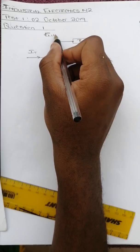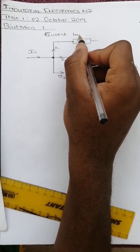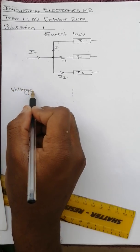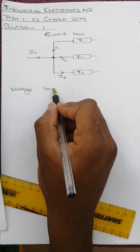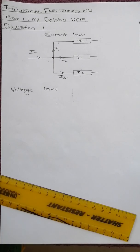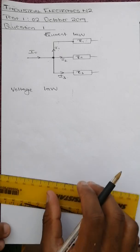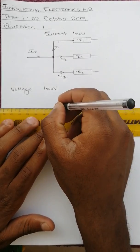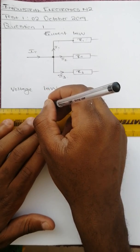Now let's see the voltage law. The voltage law states that in a closed loop, the algebraic sum of the EMFs acting around the loop equals the algebraic sum of the potential differences around that loop. Let's draw a second diagram that represents that.